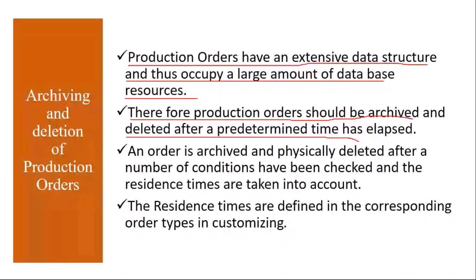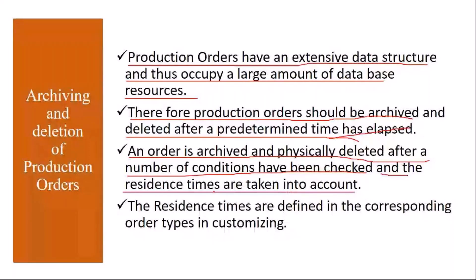An order is archived and physically deleted after a number of conditions have been checked and the residence times are taken into account. You will be physically deleting the order from the system. Once you physically delete it, if you go to CO03 it will say the order is deleted — you cannot see that order. To delete these orders, residence times are taken into account. The residence times are defined in the corresponding order types in customizing.